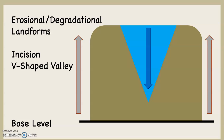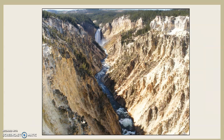The running water is attempting to cut the landscape down to base level. Base level is the lowest level to which a stream can erode — global base level is sea level, but local base level can be the level of a lake. As the river cuts down toward base level on a steep landscape, it forms a V-shaped valley. The Grand Canyon of the Yellowstone in Yellowstone National Park is a classic example, cut by the Yellowstone River.